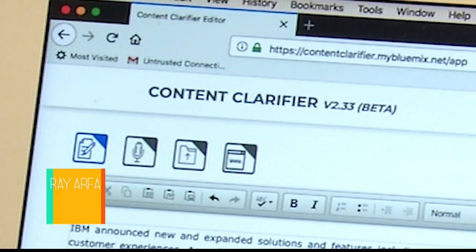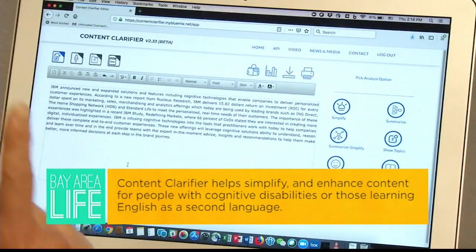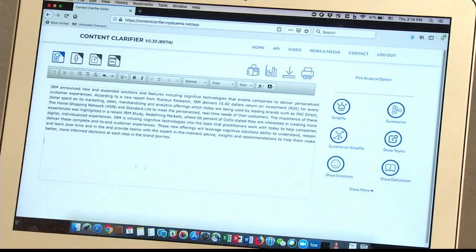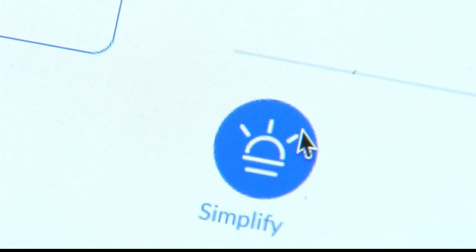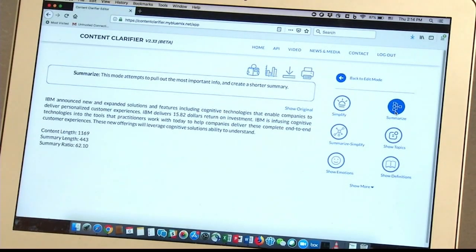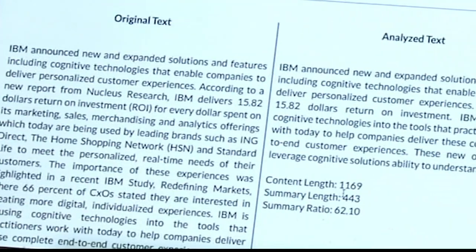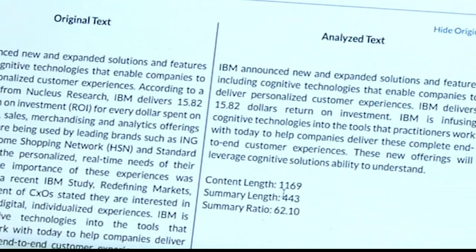And then the second one is called a content clarifier, which uses natural language processing, machine learning, and IBM's Watson technology to make reading, writing, and comprehending content much easier for people with learning disabilities.